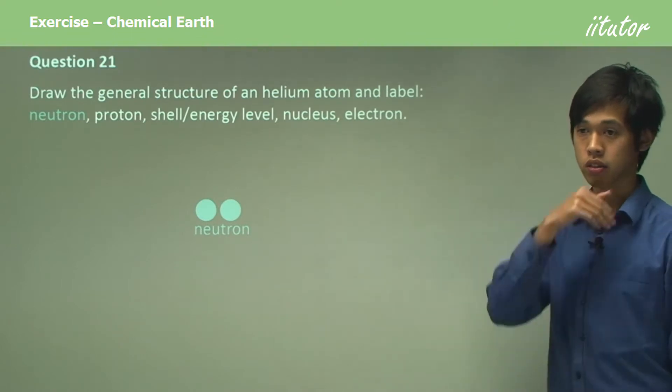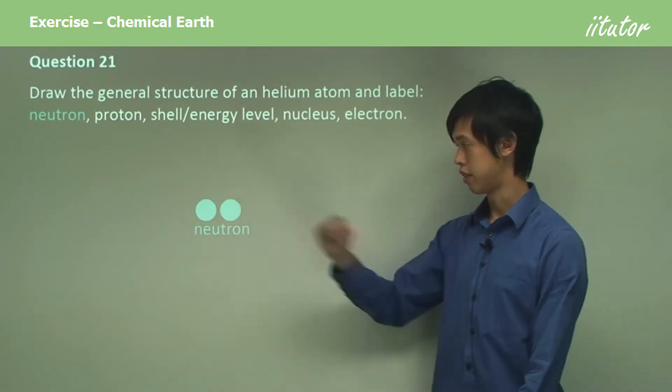So let's start with the neutrons. There are two neutrons in a helium atom, and so there's our two neutrons.